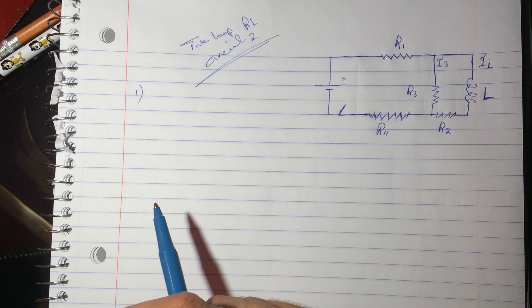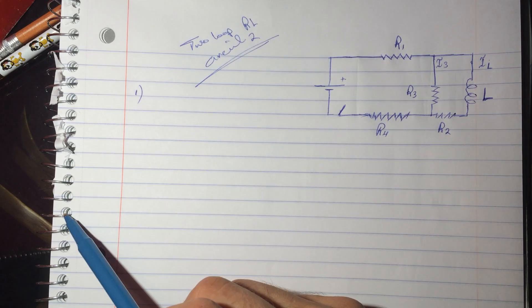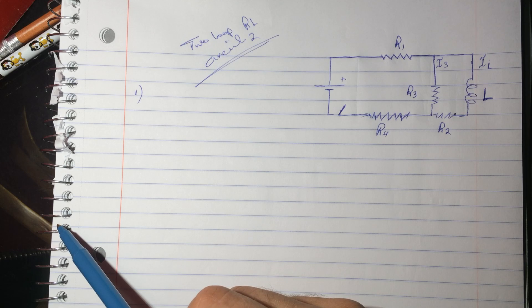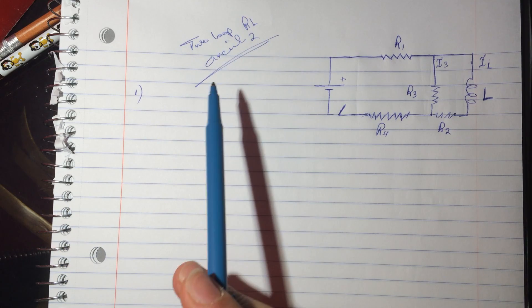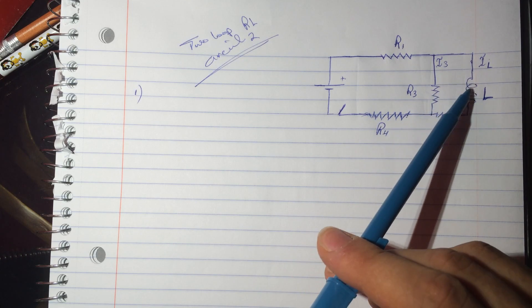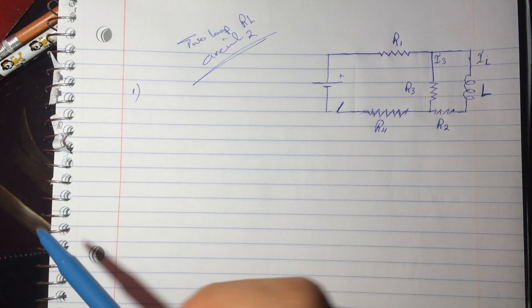Hi guys, this is the two-loop RL circuit 2, a special request for my friend Rohan. We have a circuit with a battery, resistors, and an inductor, and there are a couple of questions we need to answer.